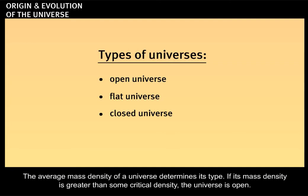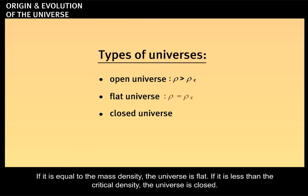The average mass density of the universe determines its type. If its mass density is greater than some critical density, the universe is open. If it is equal to the critical density, the universe is flat. If it is less than the critical density, the universe is closed.